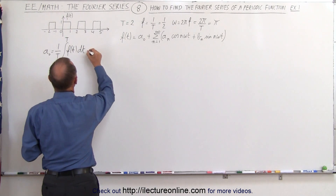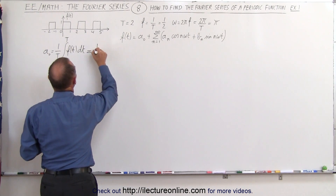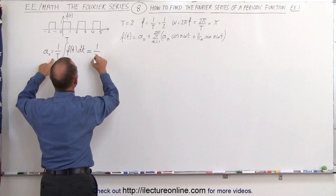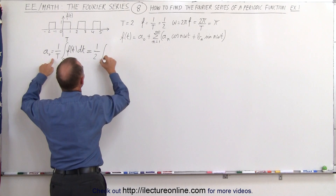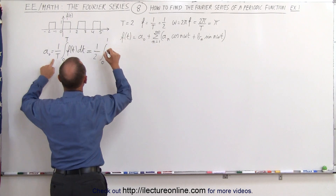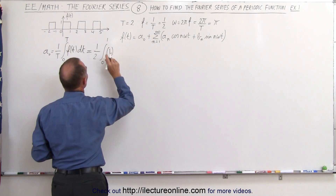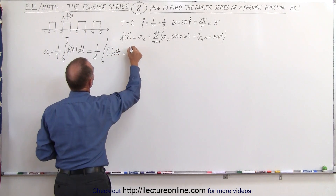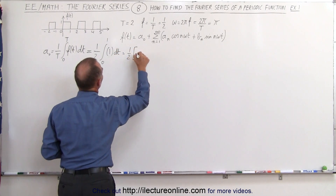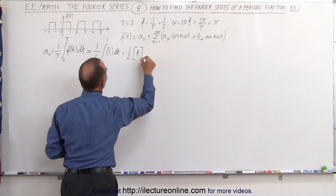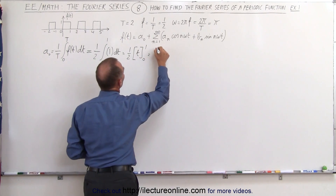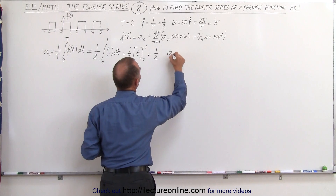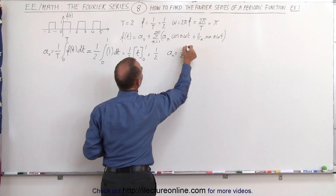So this can be written as 1 over 2 — remember the period is equal to 2 — times the integral from 0 to 1 of the function, which is equal to 1, times dt. That equals 1/2 times t evaluated from 0 to 1, which equals 1/2. So a sub 0 equals 1/2.